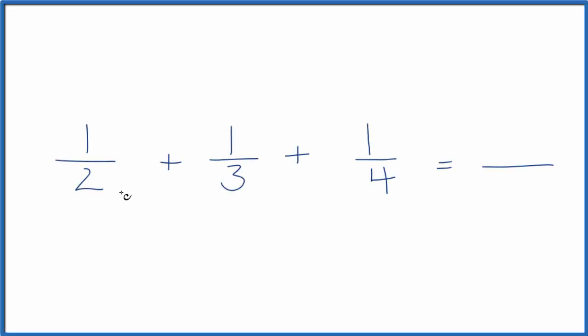In this video, we'll look at how to add three separate fractions, and these are fractions with different denominators. If the denominators were the same, we just add the top and bring the denominator across. But when they're different, we have to find a common factor.